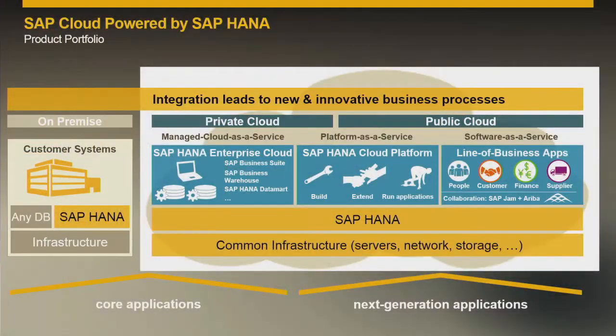Looking at the cloud side, we still have lots of customers running SAP systems in an on-premise space. Some of our biggest customers have really complex system landscapes with several hundred systems they are managing. Two years ago, we offered customers to migrate their systems to our data centers, upgrade to the HANA database to the newest version, and then we manage these systems for our customers — that's what we call Managed Cloud as a Service.